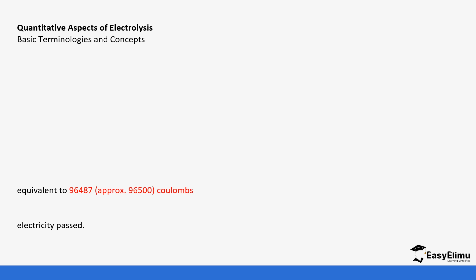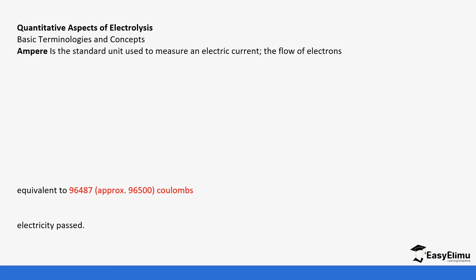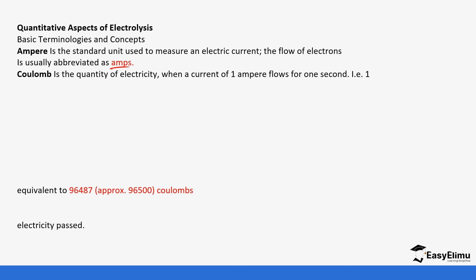When we look at the quantitative aspects of electrolysis we have some basic terminologies and concepts. First of all, we measure the amount of electricity passing through the wires — we place a voltmeter at the end. The voltmeter measures the flow of electrons. Ampere is the standard unit used to measure electric current and the flow of electrons, abbreviated as A.